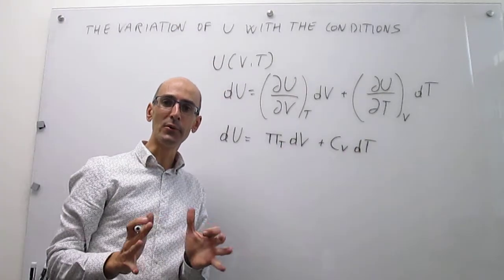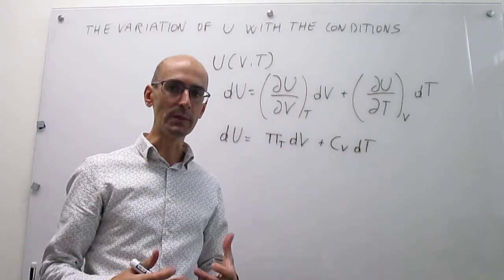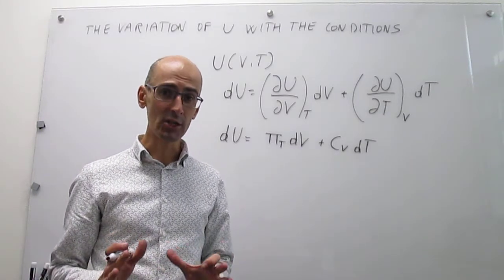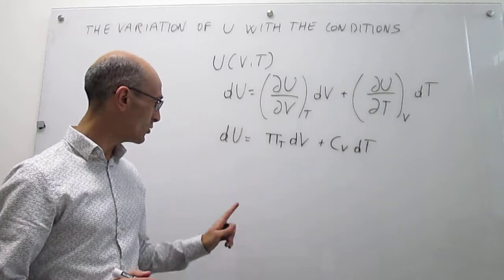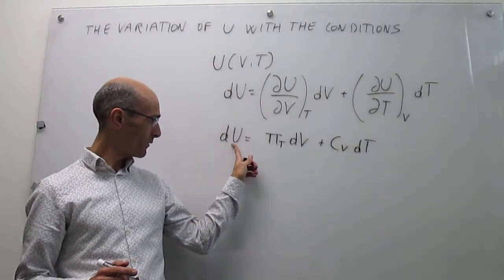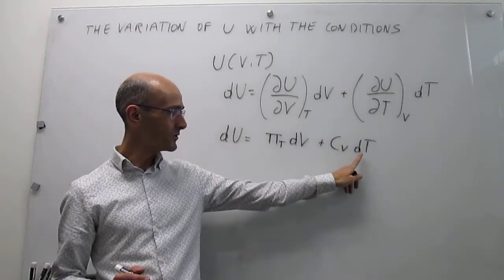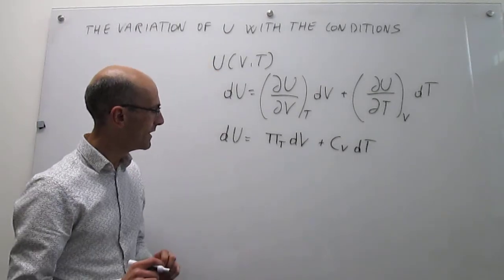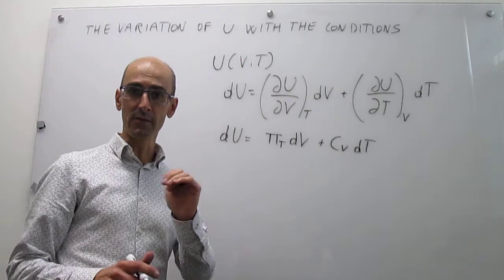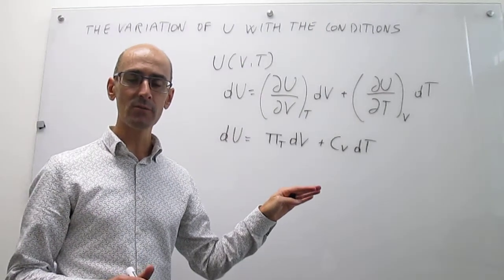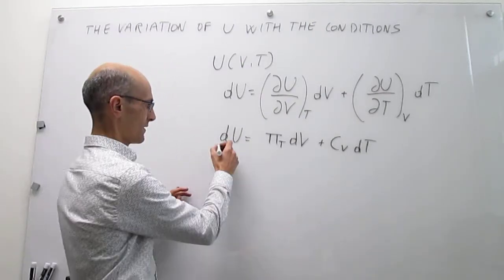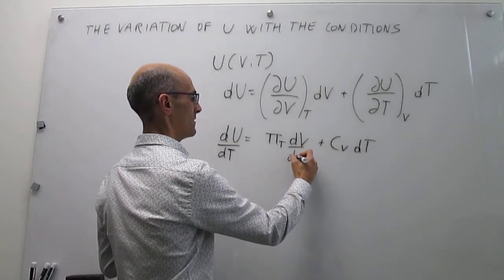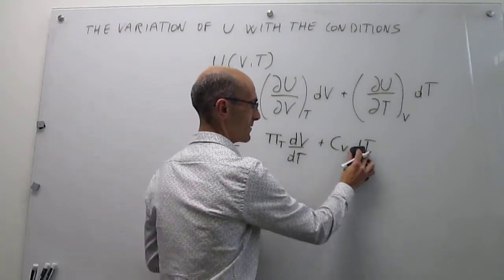This is our starting point for understanding the variation of internal energy with respect to temperature at constant pressure. Our goal is to figure out how the internal energy changes with temperature by enforcing constant pressure. The first thing we do is divide all terms of this expression by the differential of T, which we do here, and of course that cancels out.